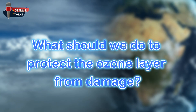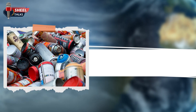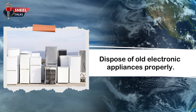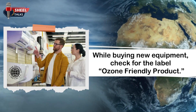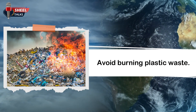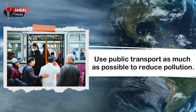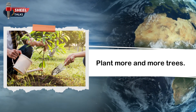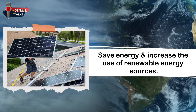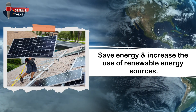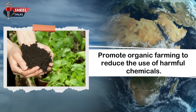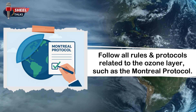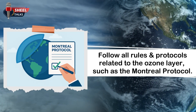Now, what should we do to protect the ozone layer? Avoid the use of ozone-depleting substances. Dispose of old electronic appliances properly. While buying new equipment, check for the label 'ozone-friendly product.' Avoid burning plastic waste. Use public transport as much as possible to reduce pollution. Prevent deforestation and plant more trees. Save energy and increase the use of renewable energy sources. Promote organic farming to reduce the use of harmful chemicals. Encourage environment-friendly industries and technologies. Follow rules and protocols related to the ozone layer, such as the Montreal Protocol.